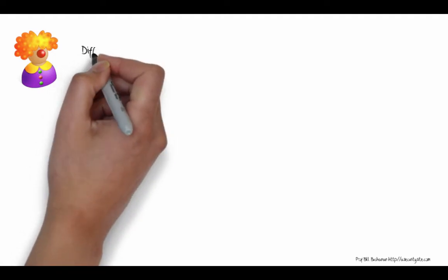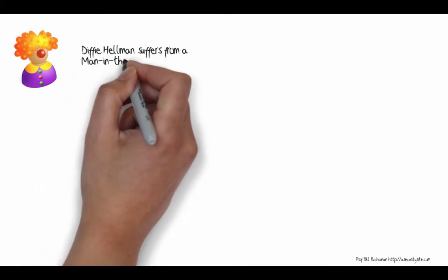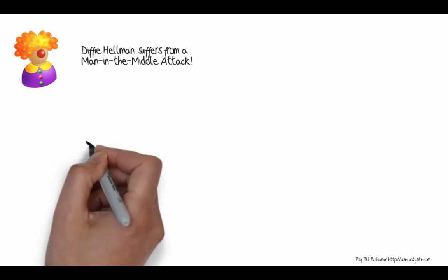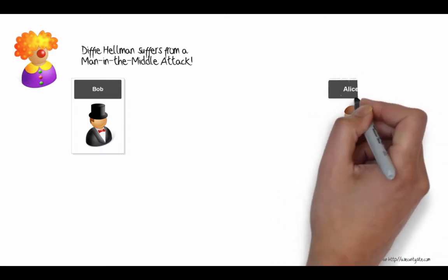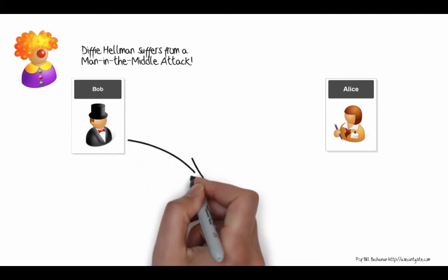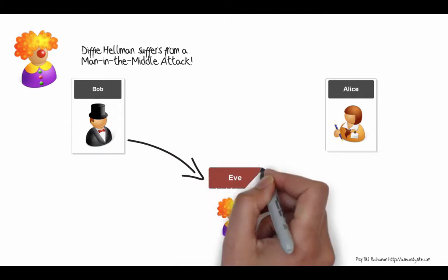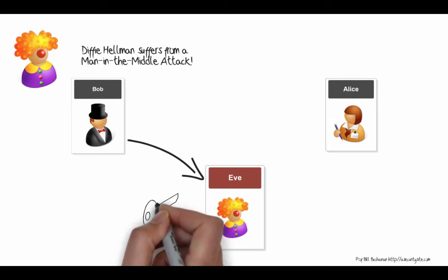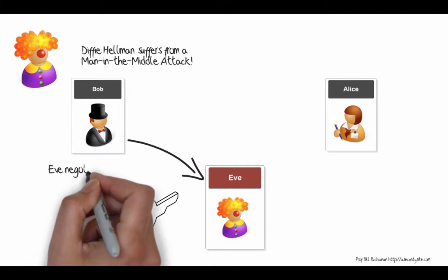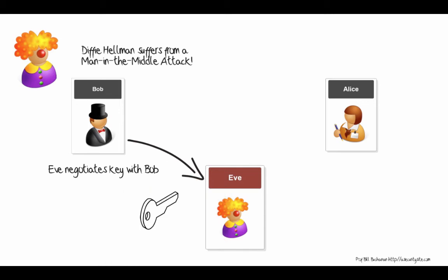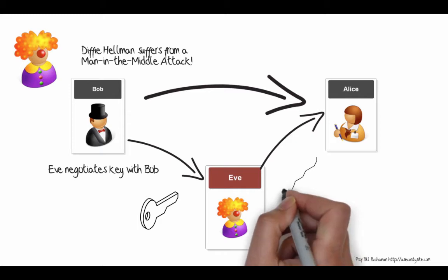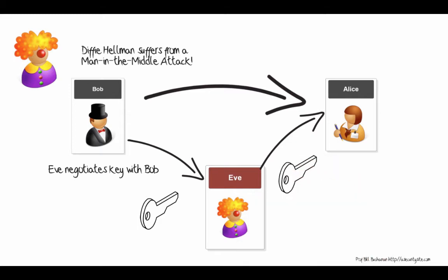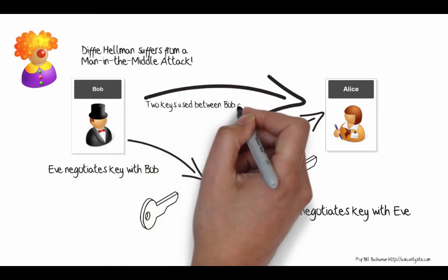Unfortunately Diffie-Hellman suffers from a man-in-the-middle attack. If Eve gets between the key negotiation, she'll negotiate one key with Bob and another key with Alice. As far as Bob and Alice are concerned they're using a single shared key, but actually all traffic is going through Eve. She negotiates two tunnels — one between her and Bob, and one between her and Alice — so they think they're communicating securely but they're not.